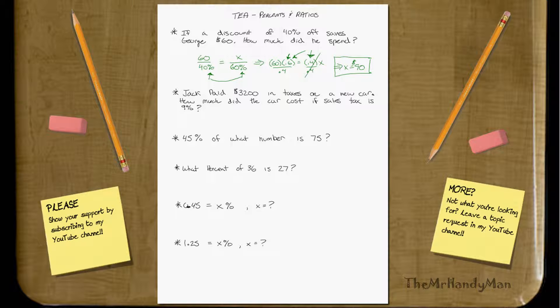All right, Jack paid $3,200 in taxes on a new car. How much did his car cost if sales tax is 9%? Well, we can just use the same ratios, right? $3,200 is to 9% equals x value of the car, and the car's value is 100%.